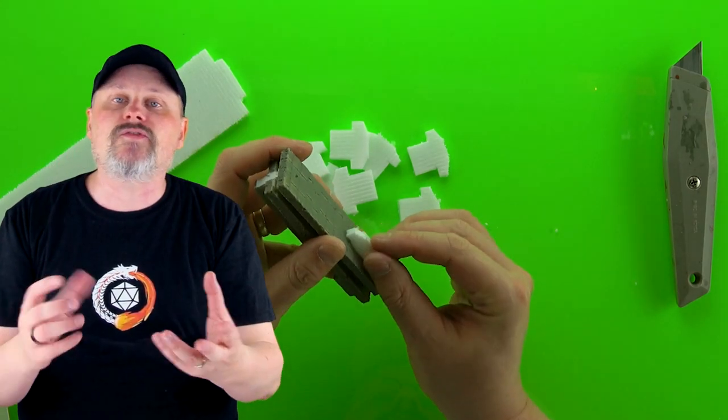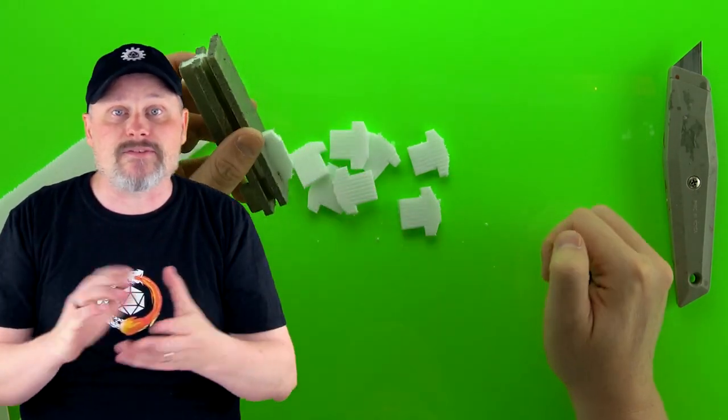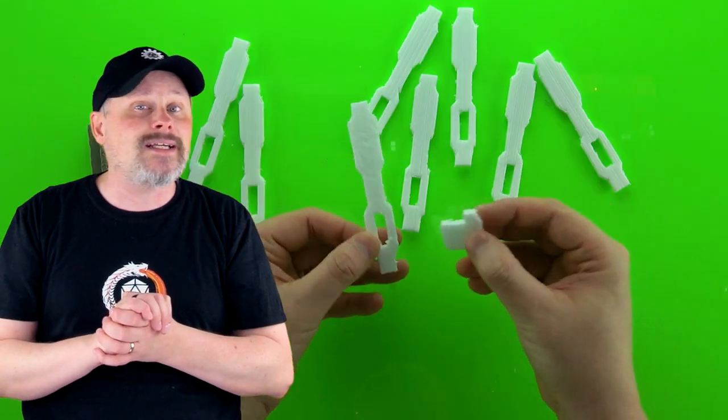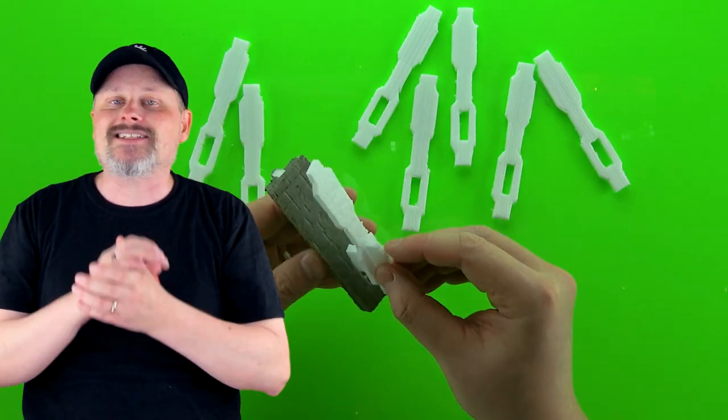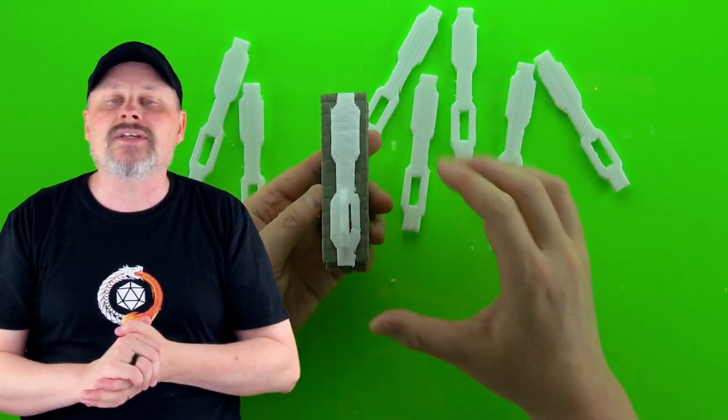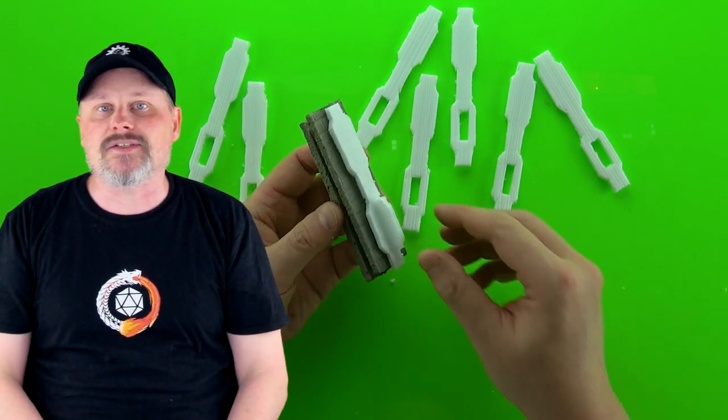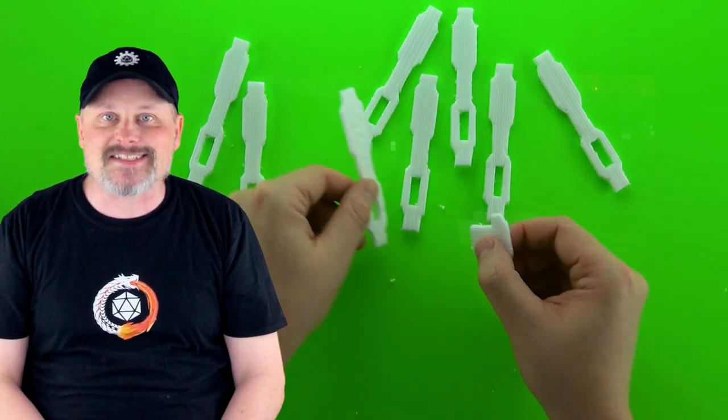In this video we're going to be making inserts for socketed connectors that are made out of foam. On top of that we're going to be making sleeves for those inserts. Sleeves wrap around inserts to add another level of detail to your socketed connectors. So let's get started.